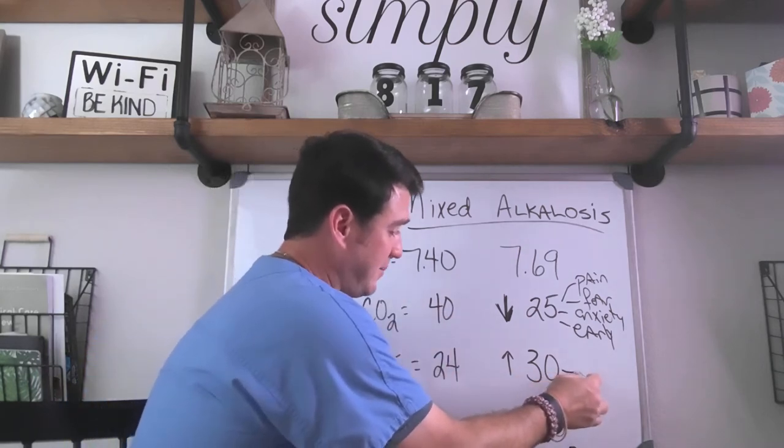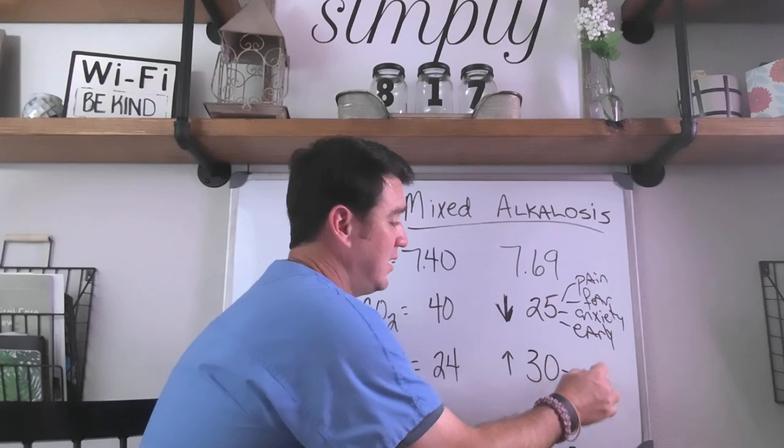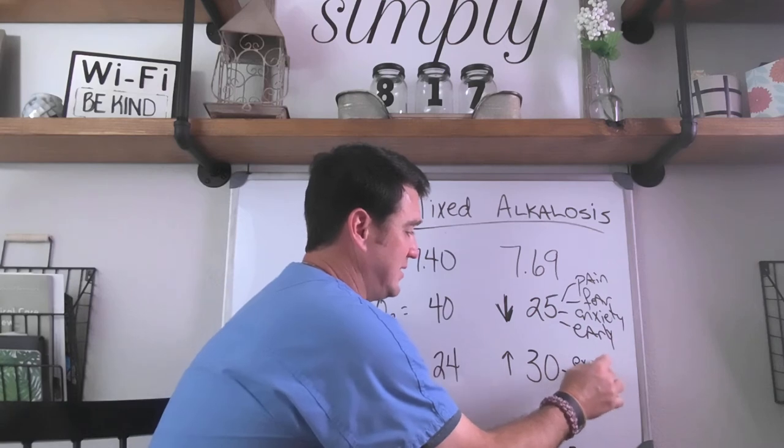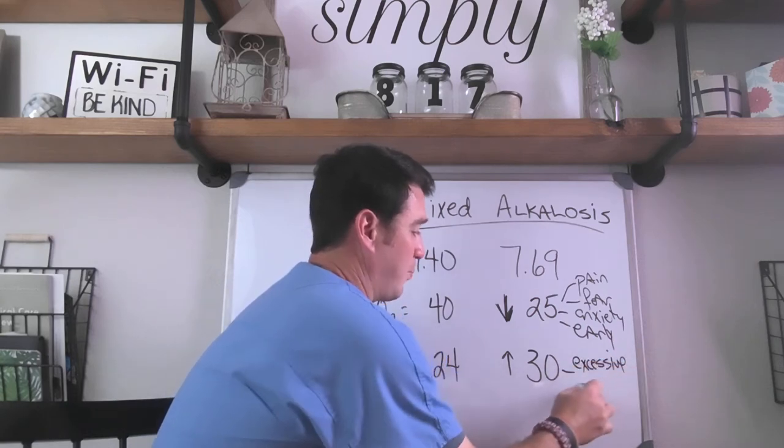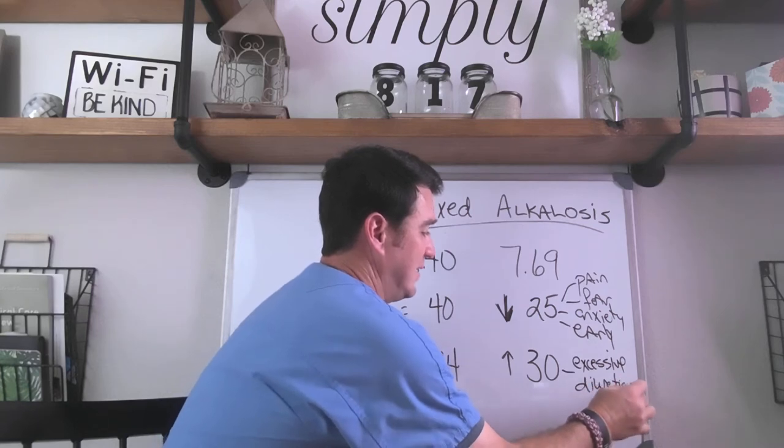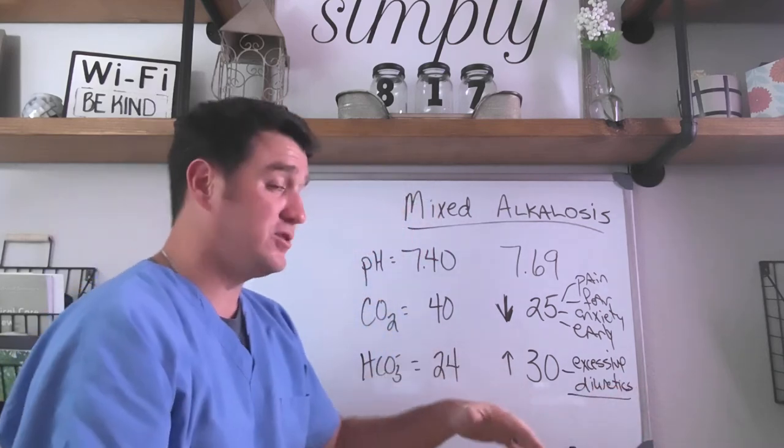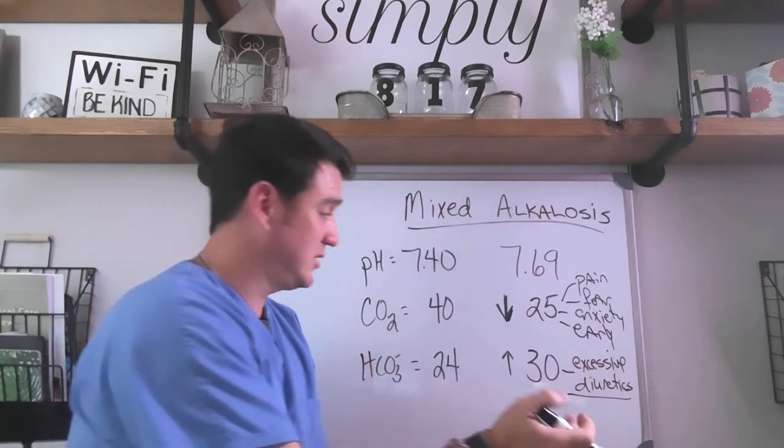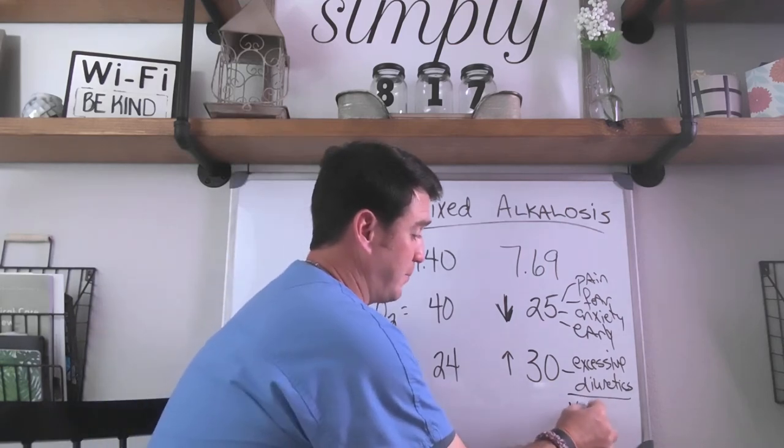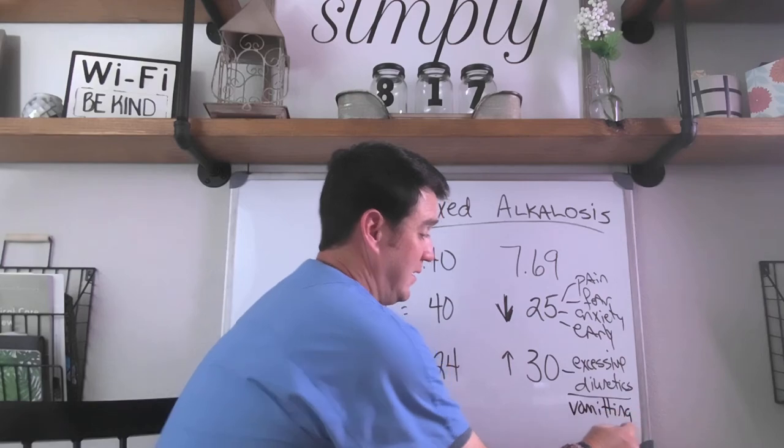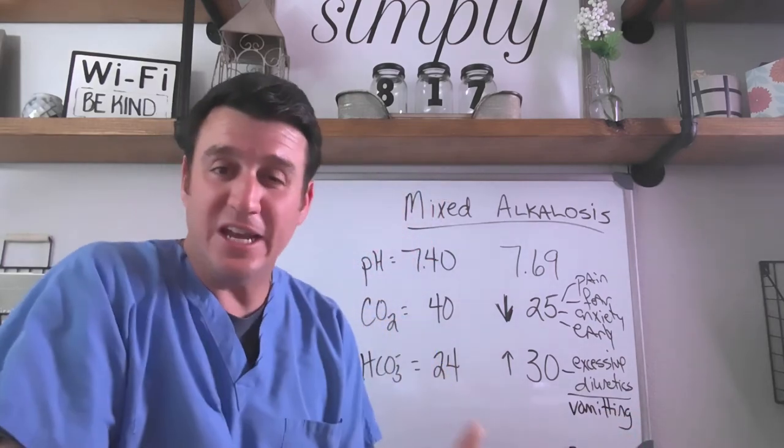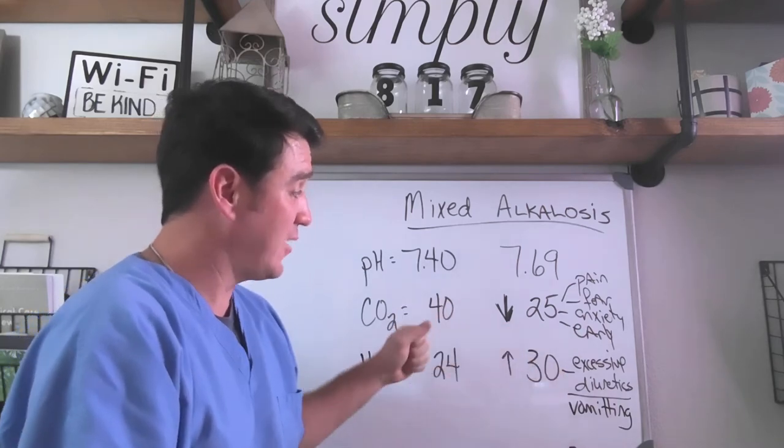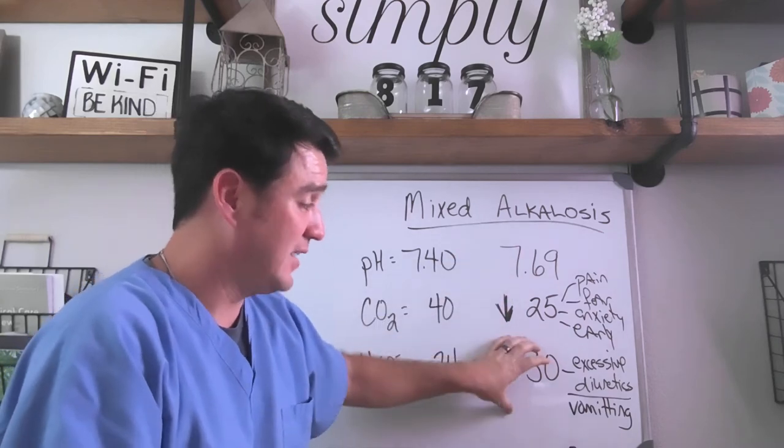Then we ask ourselves, what would cause the bicarb to go up? One of the things we know is excessive or prolonged use of diuretics. We also talked about metabolic alkalosis being a loss of acid in the body, which would cause your bicarb to be in excess. So maybe persistent vomiting could cause a metabolic alkalosis. You see here where you have multiple things going on, and you have to ask yourself, how do we fix the respiratory alkalosis and how do we fix the metabolic alkalosis?